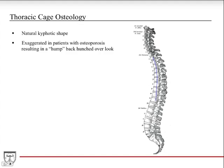The thoracic vertebrae has a kyphotic shape, which means it's concave from the anterior and convex from the posterior view. That's the natural shape of it, and it's exaggerated in patients with osteoporosis. In osteoporosis, you have loss of bone mass due to decreased calcium and vitamin D, so you have loss of structure. These vertebrae become very weak and they tend to shift outward — that's what gives that hunchback appearance. This is a very exaggerated line, but just to give you the idea.